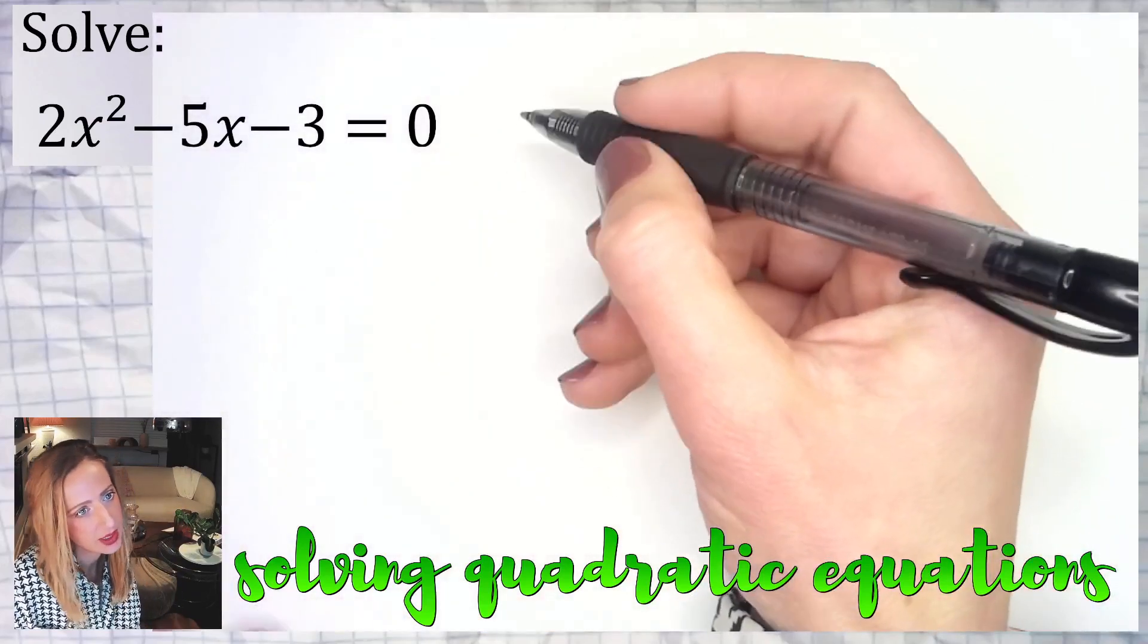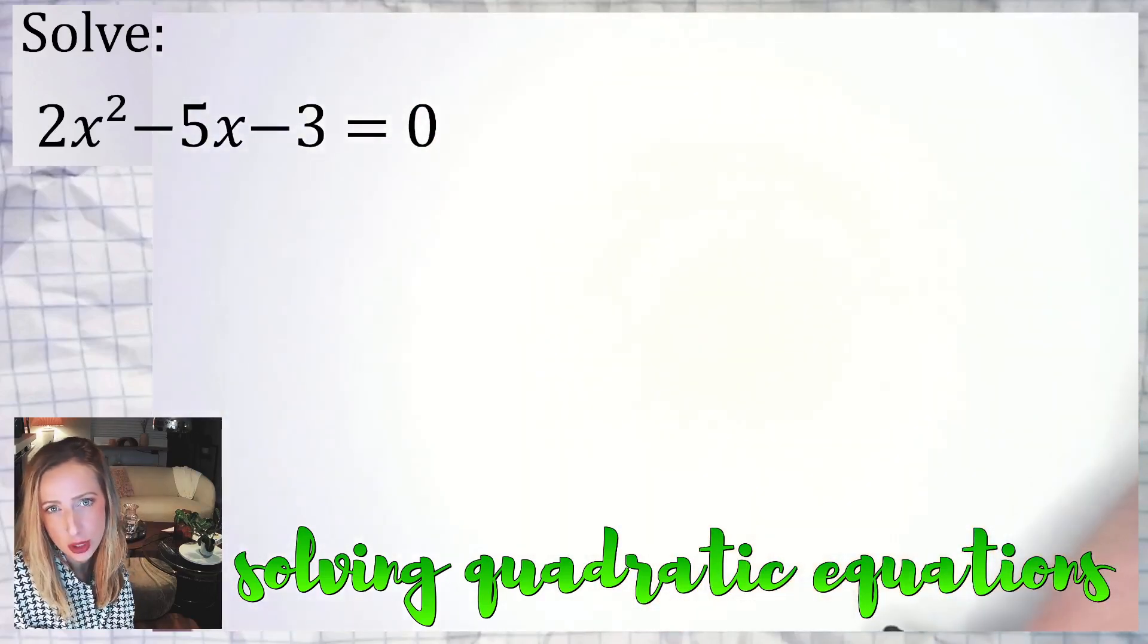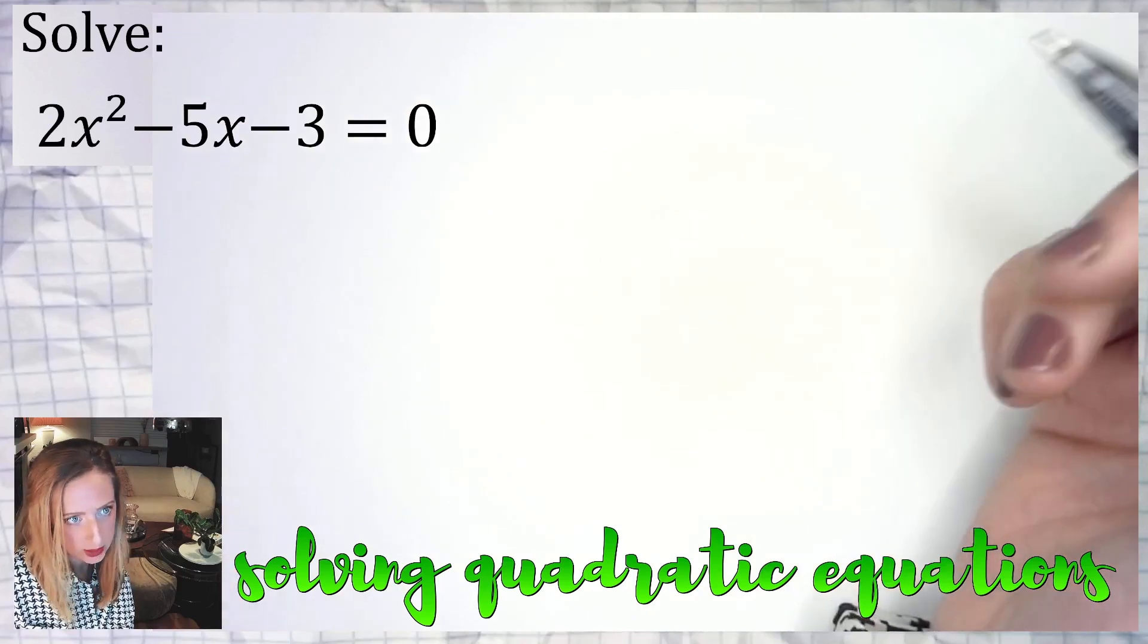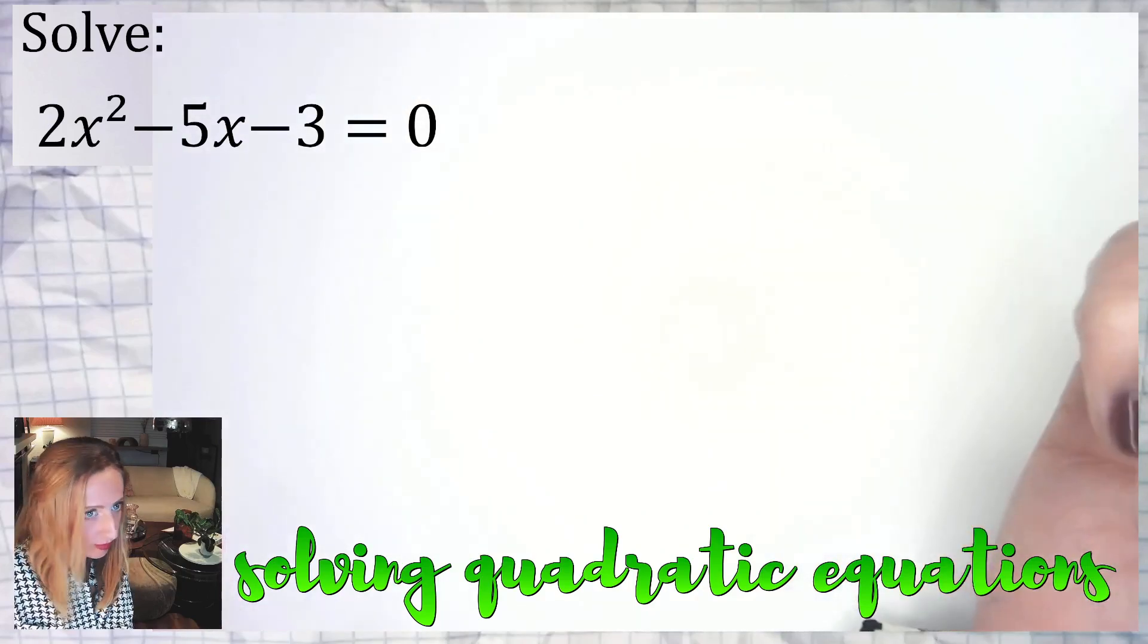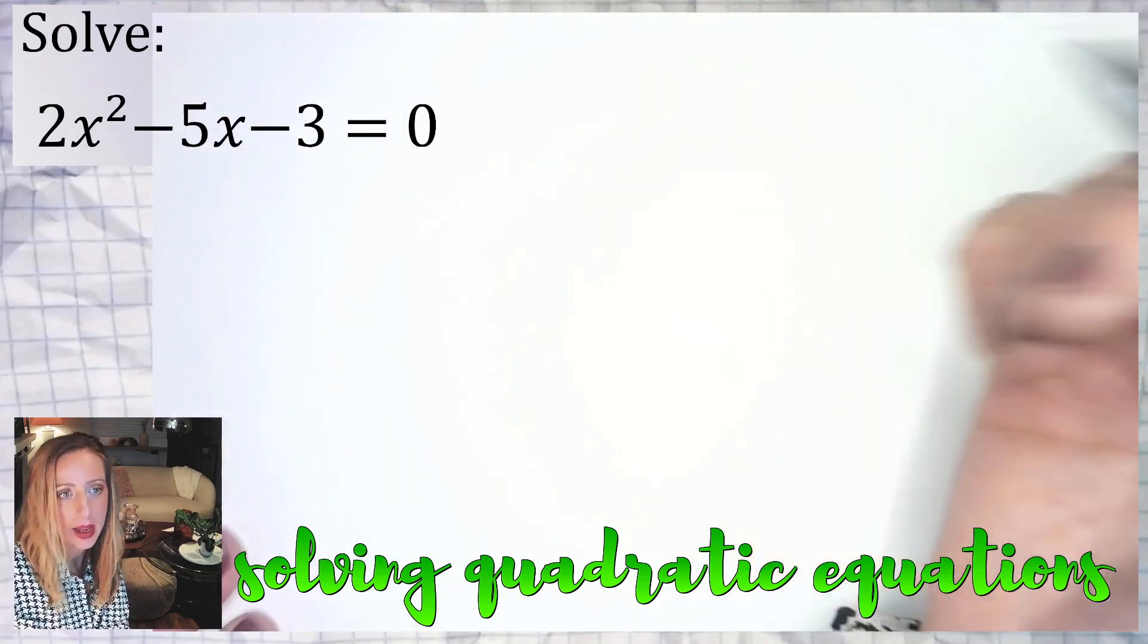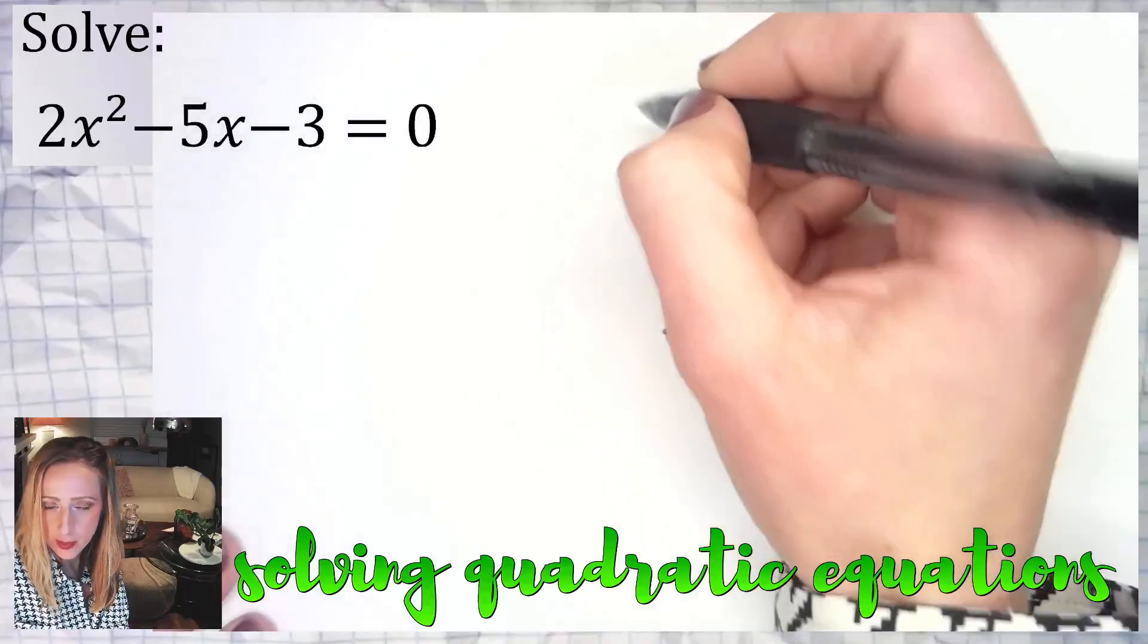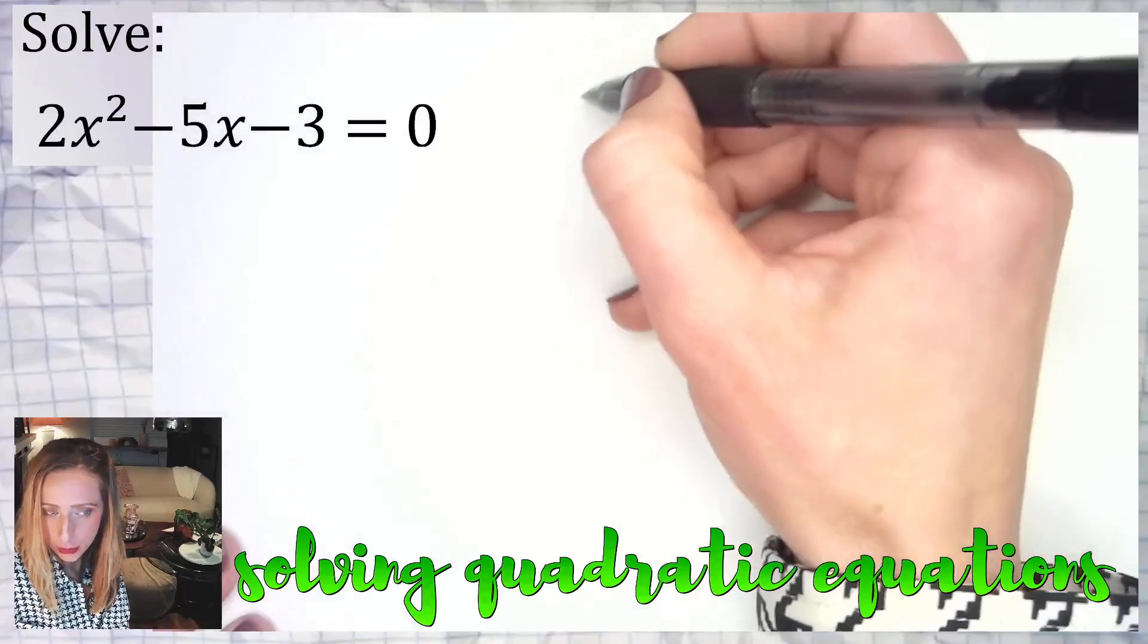Whenever you are presented with a quadratic equation, you want to make sure it's equal to zero before you try any of the normal techniques. One tried and true go-to method is going to be to try to solve such a quadratic by factoring. So let's jump in and we're going to try to solve this by the AC method with grouping.